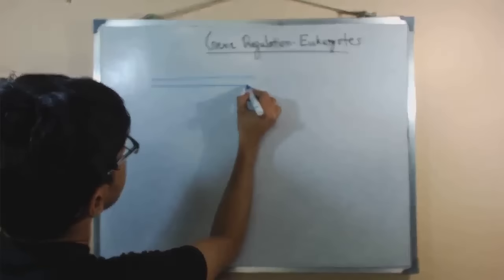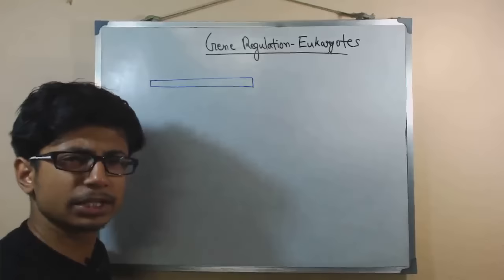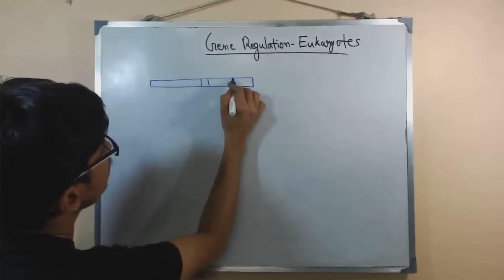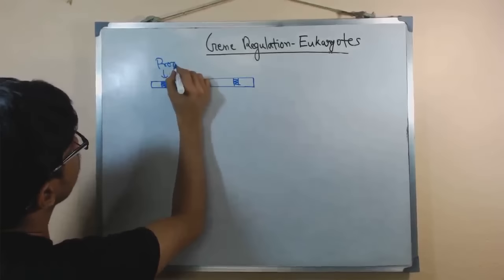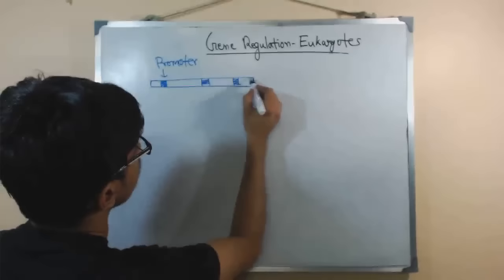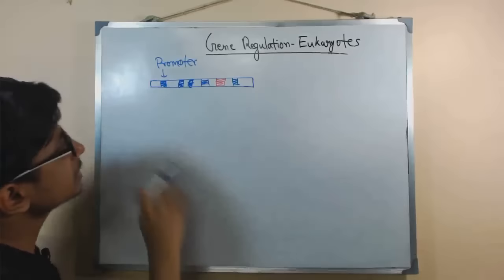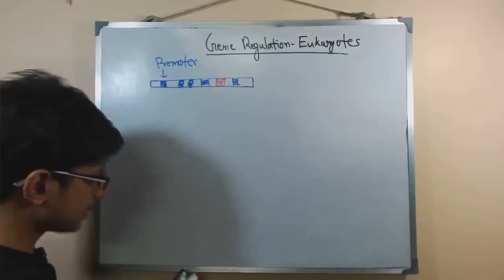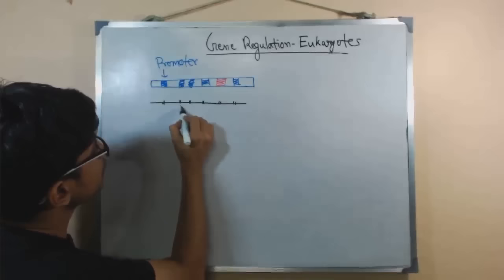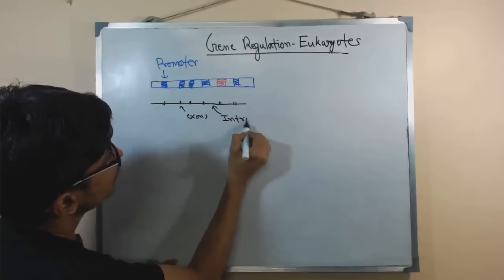If you look at eukaryotic genes and one example of their structure, what you will find is that in the DNA, we have different sections. There is definitely a section called a promoter, which is also found in prokaryotes as the controlling segment, but there are also different sections present. Once they produce the mRNA, that mRNA actually contains all these different sections seen in the DNA. There are sections called exons and sections called introns.